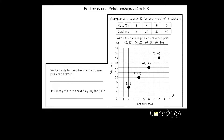Our example says Amy spends two dollars for each sheet of ten stickers. Our table here shows the cost and the number of stickers. The cost is going to be along our x-axis and the number of stickers will be along our y-axis.